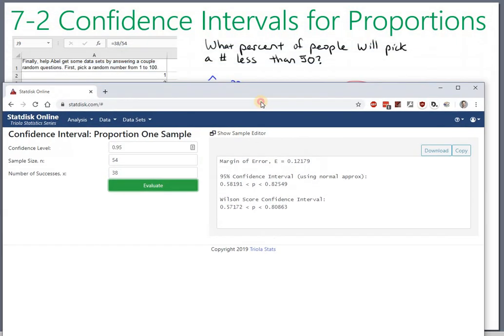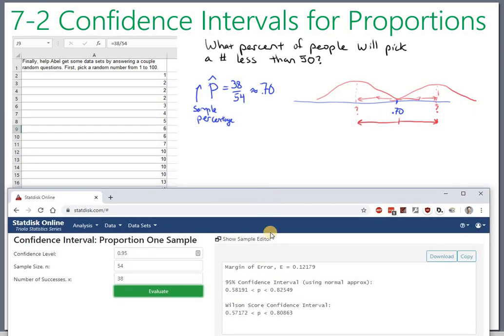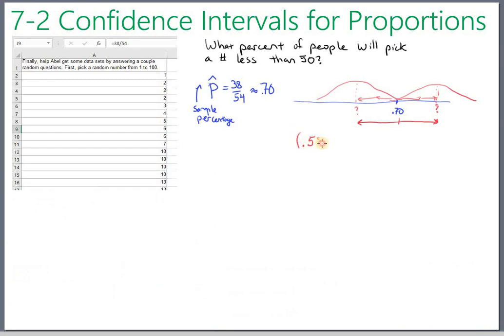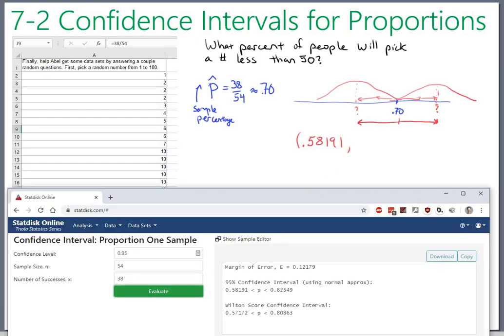Notice it gives you the margin of error. It says it's actually about 12% up and 12% down. That's my uncertainty here, around 70%. And it does go ahead and tell you what those upper and lower numbers are. If you go 12% up from 70, you get to 82%, slightly more because of this extra decimal. And when you go 12% down, you basically get down to 58%. So typically, in the book, they'll want you to write down just upper and lower bounds. So 0.58191 up to 0.82549.